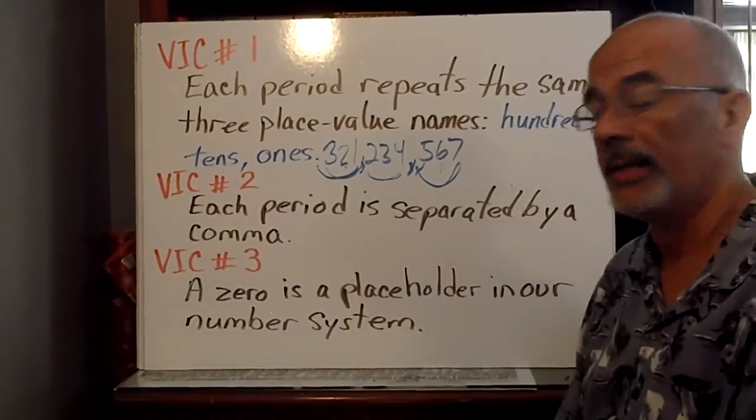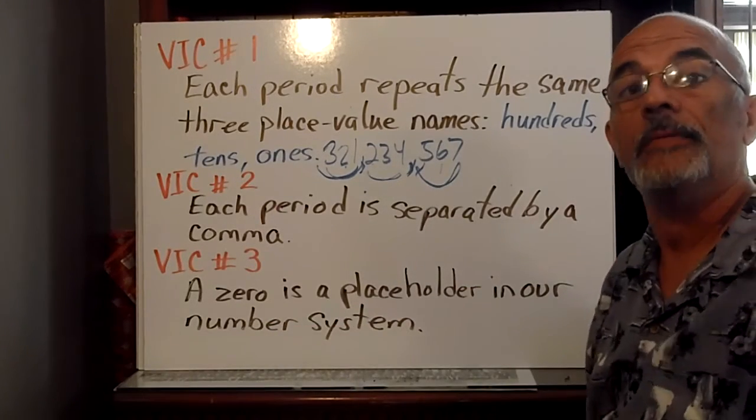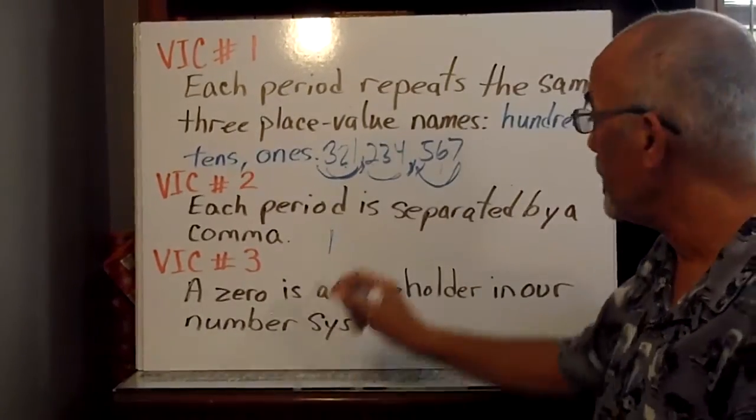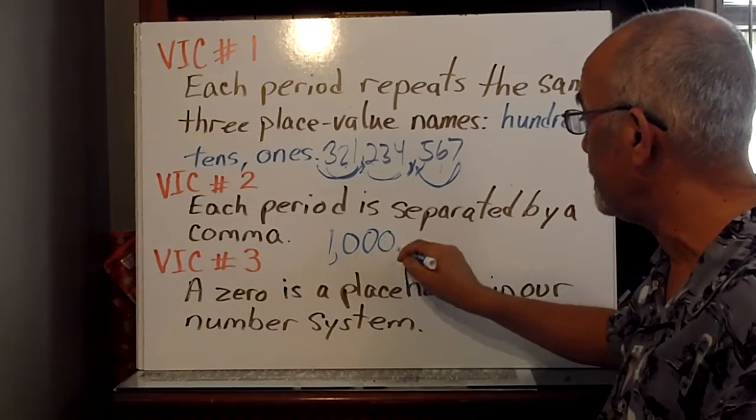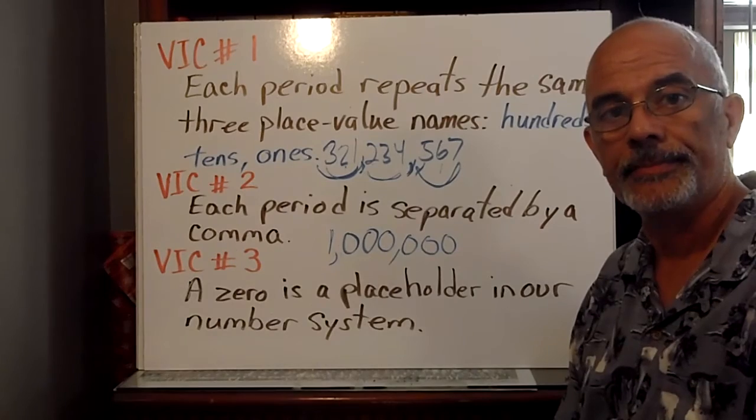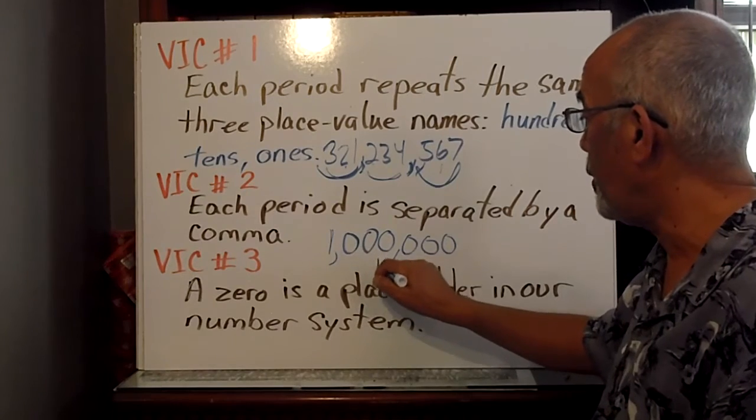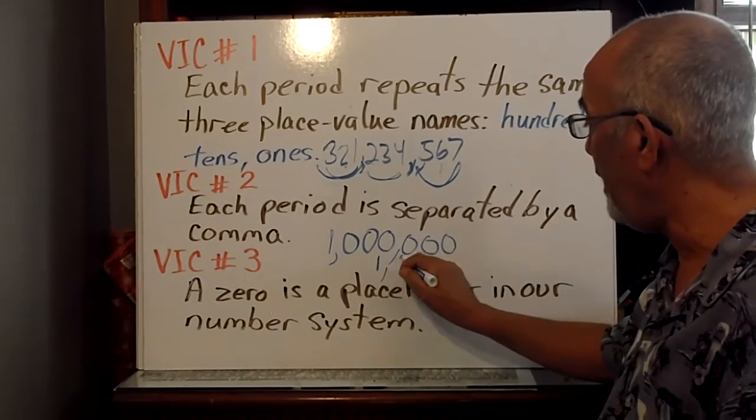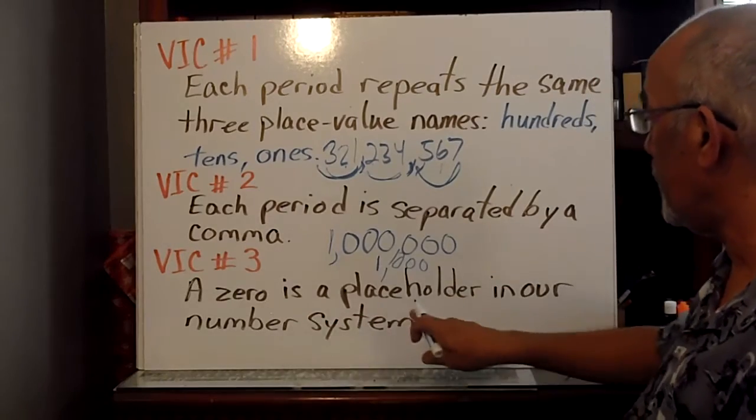The third important concept is that a zero is a placeholder in our number system. For example, if I wanted to write one million, I just can't write a one. I must have seven places. And in order for me to show that, I'm going to hold those places with zeros. One and six zeros is a million. Same thing if I wanted to write a thousand. You can't just put one thousand. I must write a one, and then three placeholders, three zeros. So, zero is a placeholder.